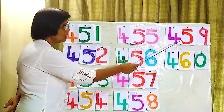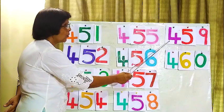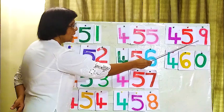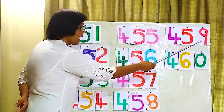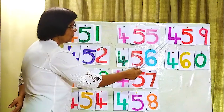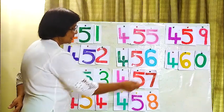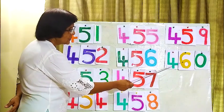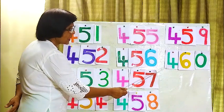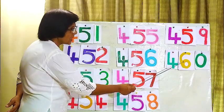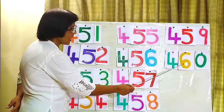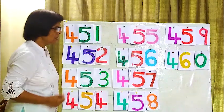Now this side, here 459. How do you read 459? 459, 459, 459. The last one here, 460. 460, 460, 460. 460. We will read from the beginning.